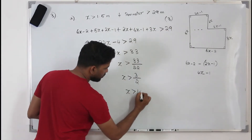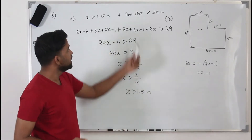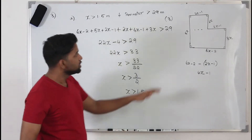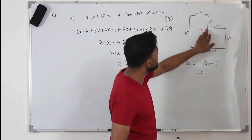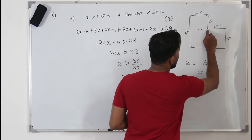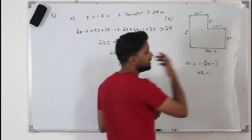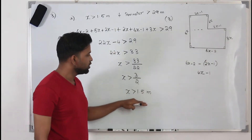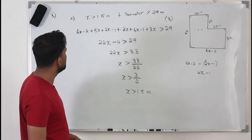The tricky part here is that the perimeter must be greater than 29 meters. When you add everything up, you need to be very careful — do not leave out any boundary line. You need to calculate the length of all the lines and add them up. That's the tricky part. With that, we've completed Part A. Now we move on to Part B.